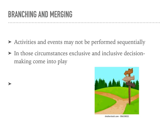In BPMN, exclusive decisions and inclusive decisions are two different types of decision gateways used to model decision points within a business process. Exclusive decisions, represented by an exclusive gateway — a diamond shape with a single outflowing flow and multiple incoming flows — are used to model decision points where only one path can be taken based on specified conditions. When a process reaches an exclusive decision gateway, the conditions associated with each inflowing arc are evaluated. Only the flow whose condition evaluates to true will be followed, and all other flows will be disregarded. Exclusive decisions are useful when there is a need to choose a single path based on mutually exclusive conditions. They ensure that only one path is taken, leading to a deterministic outcome.